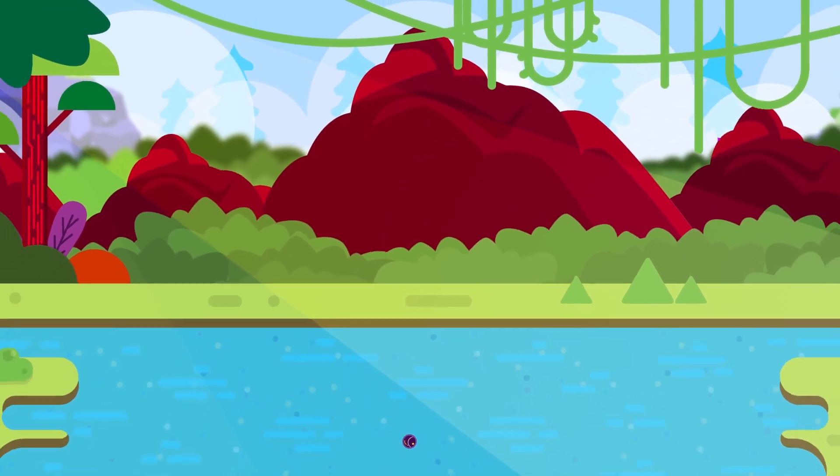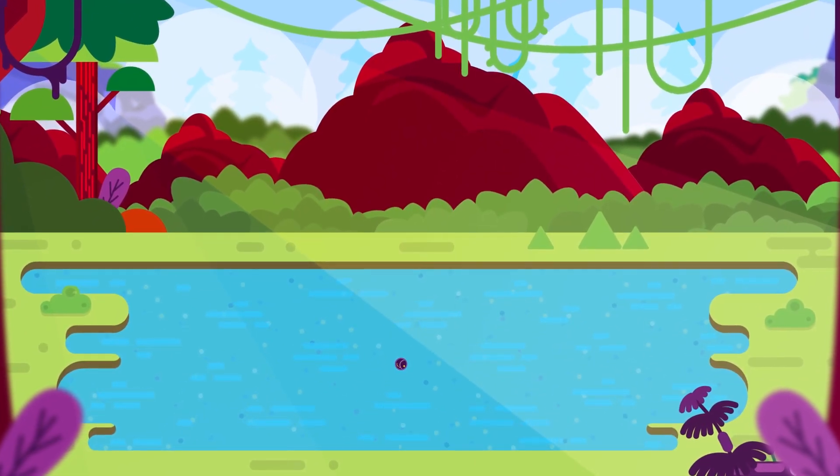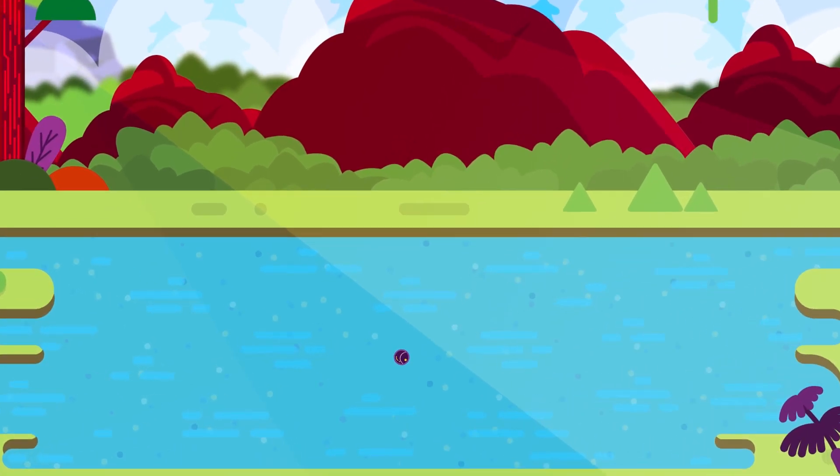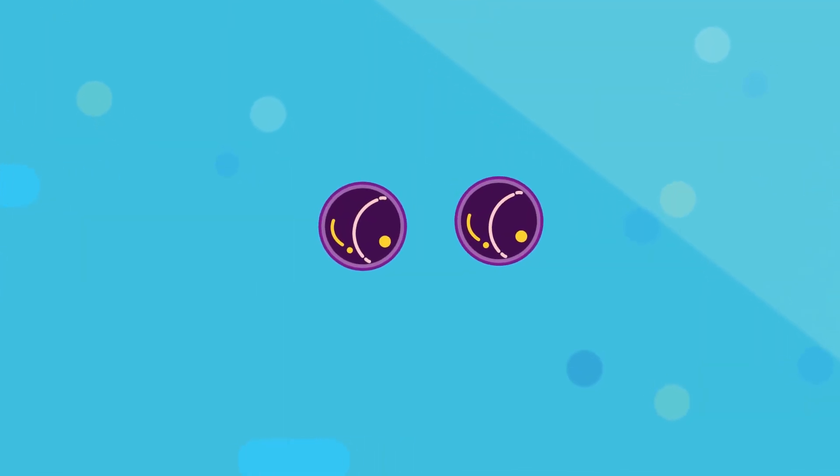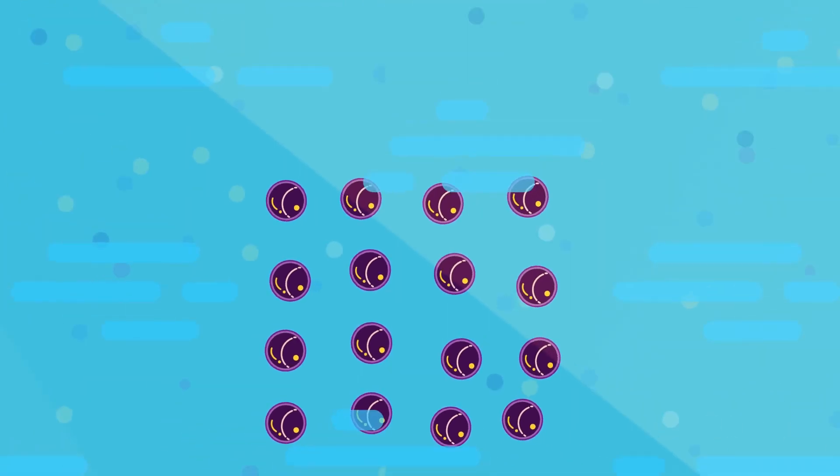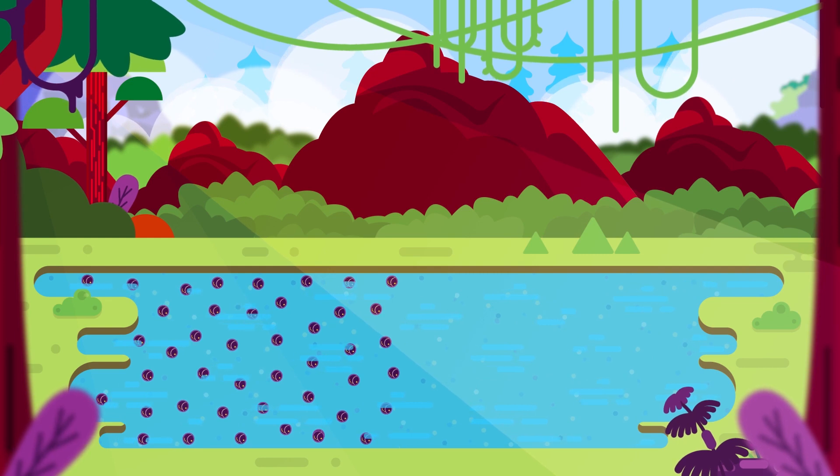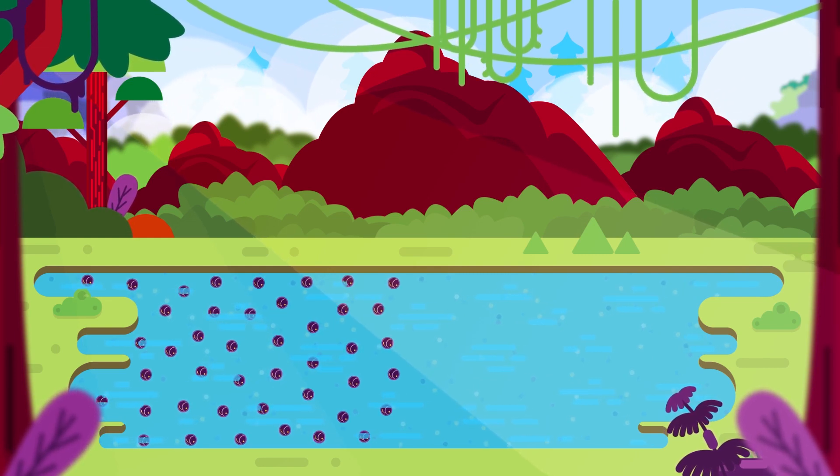Suppose there is one bacterium in a lake. And this bacterium reproduces by binary fission every 10 seconds. One bacterium becomes two, two becomes four, then eight, and so on. If in 30 days the lake is completely covered, then 10 seconds before complete saturation, only half the lake is covered.